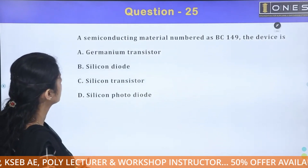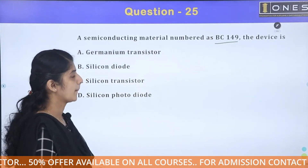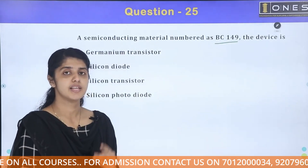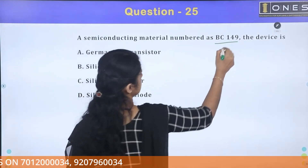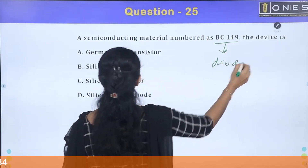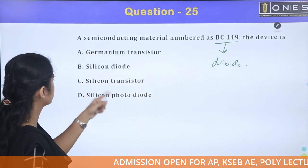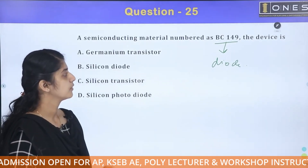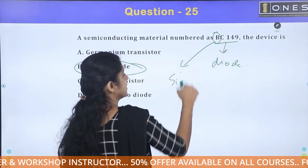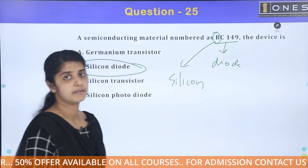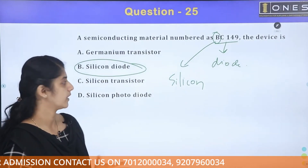Next question: a semiconducting material numbered BC149 — what is the device? The options are: germanium transistor, silicon diode, silicon transistor, or silicon photodiode. BC149 is a silicon transistor, as the 'B' prefix indicates it is made of silicon material.